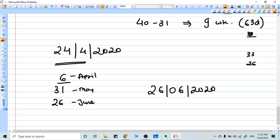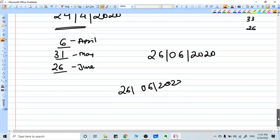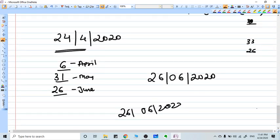Six days of April remain, 31 days of May, 26 of June. So on 26th June will be the EDD, means expected date of delivery of this patient.